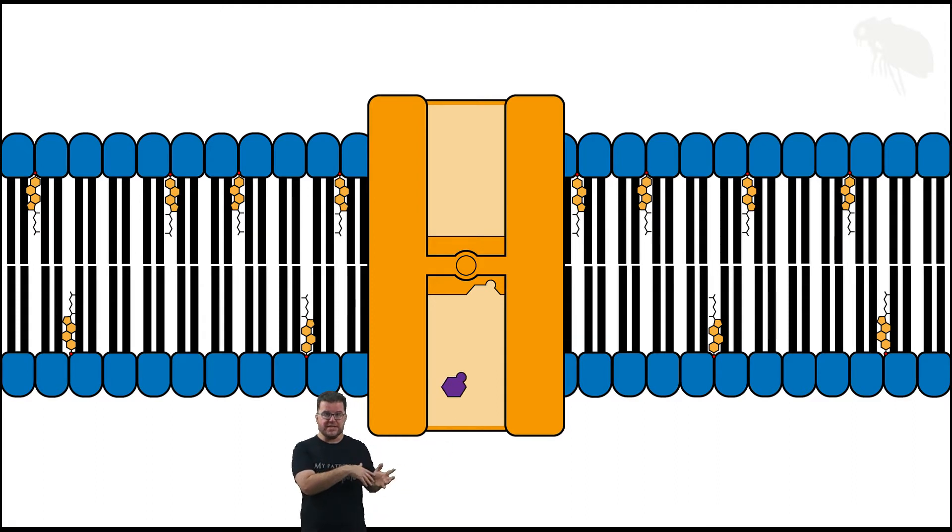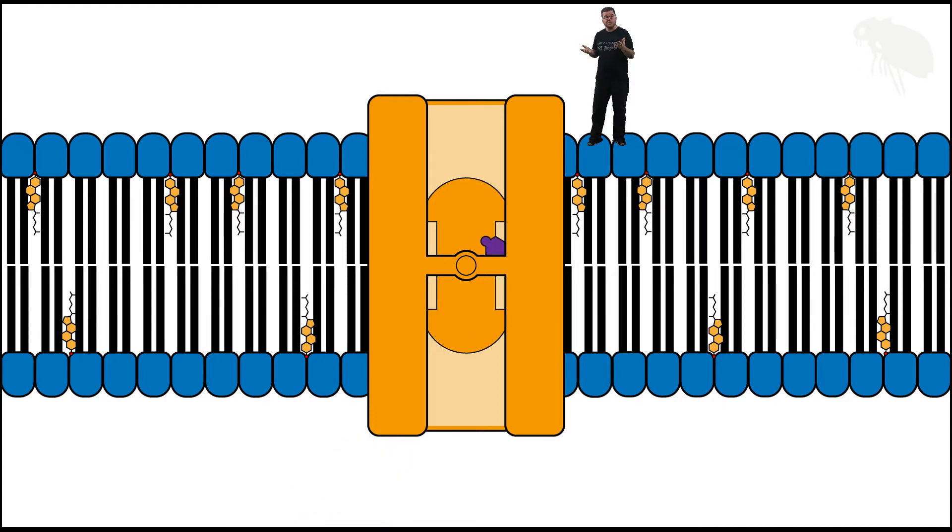When the sugar moves into the protein and interacts with the binding site, we get our induced fit. And as is always the case with proteins, when their environment changes—and a protein binding to something is its environment changing—its conformation changes.